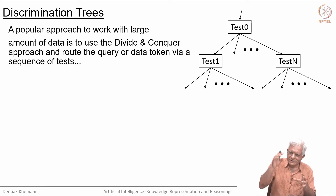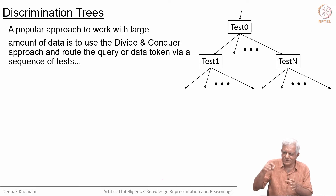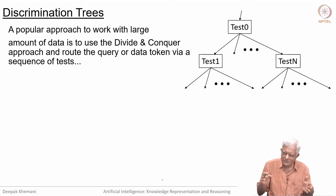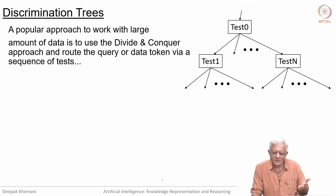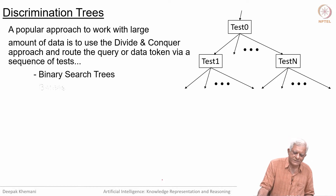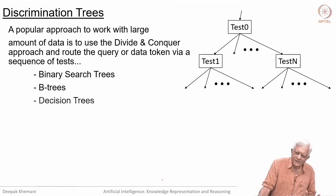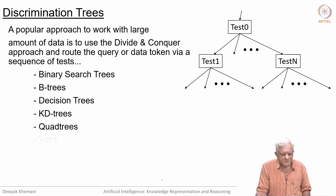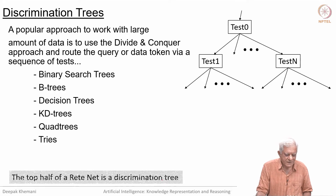You do test 0 at one level, then depending on what the data matches, you send it down one path and then do another test and so on. Since the depth of the tree is typically smaller than the length of the data elements, this is much more efficient. We have studied this in various places: binary search trees, B-trees, decision trees, KD trees, quad trees, and tries — tries are used with alphabets essentially.